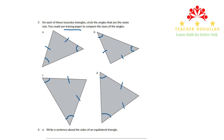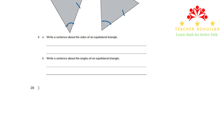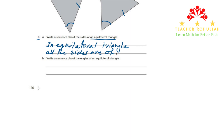Let's now move to question number six. The first part says: write a sentence about the sides of an equilateral triangle. We know that an equilateral triangle is a triangle in which all three sides and three angles are of equal sizes. So I can write: an equilateral triangle — all the sides are of equal sizes.